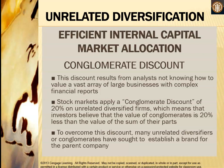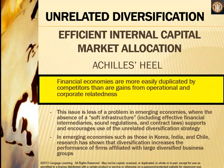To overcome the conglomerate discount, many unrelated diversifiers have sought to establish a brand for the parent company. Financial economies are more easily duplicated by competitors than gains from operational and corporate relatedness. This is less of a problem in emerging economies where the absence of a soft infrastructure — including efficient financial intermediaries, sound regulations, and contract laws — supports the use of the unrelated diversification strategy. Research has shown that in emerging economies such as Korea, India, and Chile, diversification increases the performance of firms affiliated with large diversified business groups.